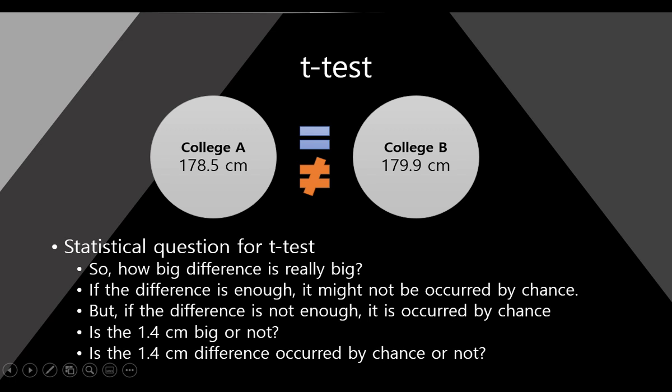We can reframe the statistical question for T-test like this: how big is a difference that is really big? In this example, we have 1.4 cm. If this difference is statistically enough, it might not be occurred by chance. However, if this difference is statistically not enough, it is occurred by chance. So our question is: is 1.4 cm big or not?